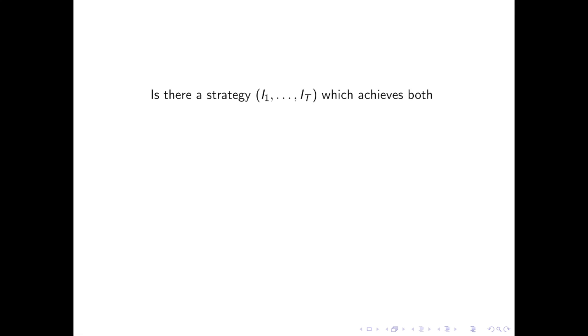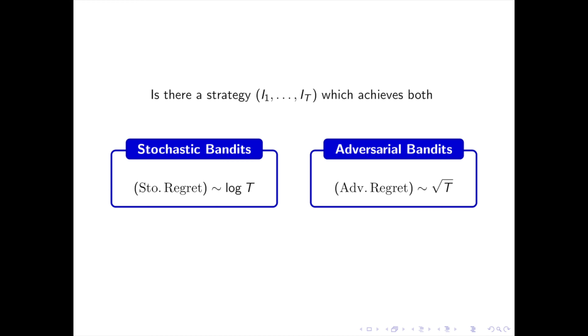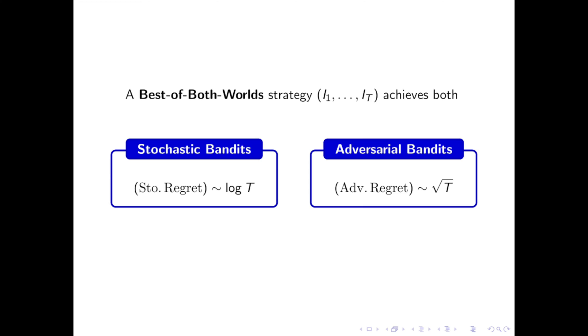A natural question then arises: is there a strategy which achieves both optimal regret bounds simultaneously? Precisely, is there a strategy which achieves a log T regret in the stochastic setting and a √T regret in the adversarial setting? The answer is yes, and such strategies are called best of both worlds. One famous example is a strategy called Tsallis-INF, which we'll mention again later. The strength of a best of both worlds strategy is that it achieves the best possible regret when rewards are stochastic, and at the same time, if rewards are not stochastic, it still guarantees the regret will not exceed √T.